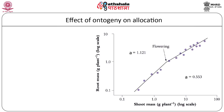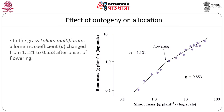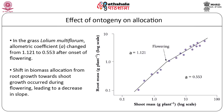Ontogenetic drift is also evident during shifts in the developmental stages of the plant, that is, from vegetative to flowering stage. This drift can be shown by allometric analysis. For example, in the grass Lolium, the allometric coefficient A changed from 1.121 to 0.553 after onset of flowering. Hence, a shift of biomass allocation from root growth towards shoot growth was seen to occur following the emergence of inflorescence. Though shoot biomass was about 10 times more than root biomass, the change in allometry was observed as a change in slope and was independent of the actual size or mass of the two organs.